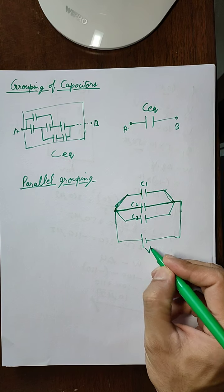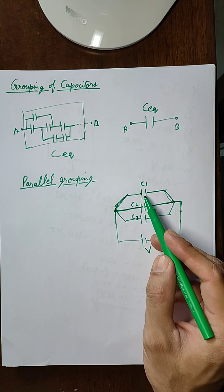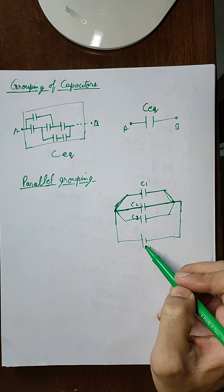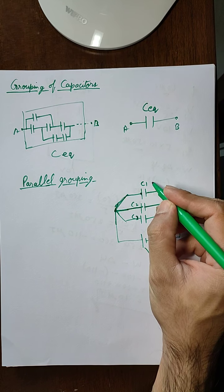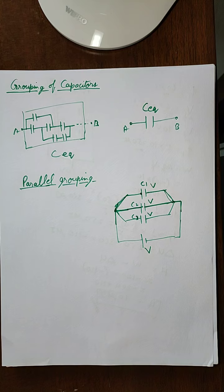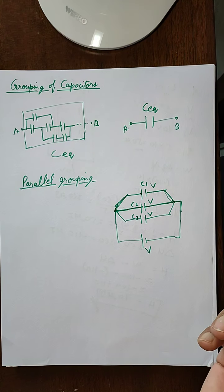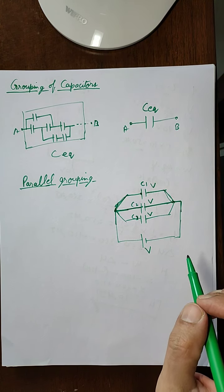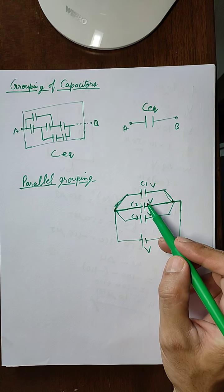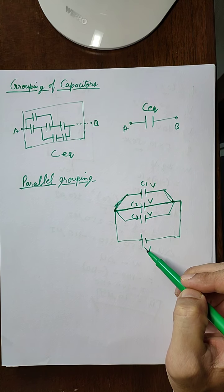Now let us say that this battery has a potential difference V. Since each capacitor is parallelly connected to the battery, the potential difference across each capacitor will be equal to the potential difference of the battery. When steady state is achieved, each capacitor in the parallel combination will have the same potential difference as that of the battery.